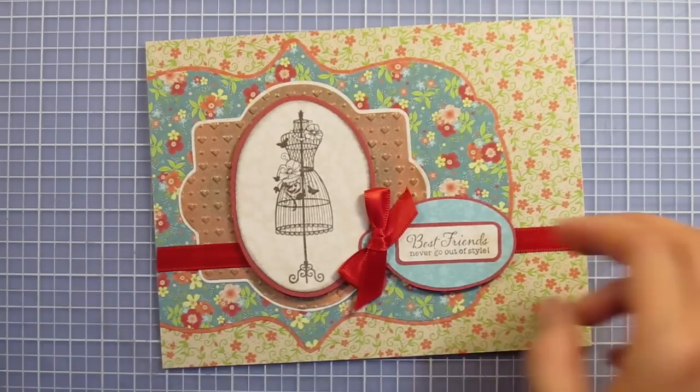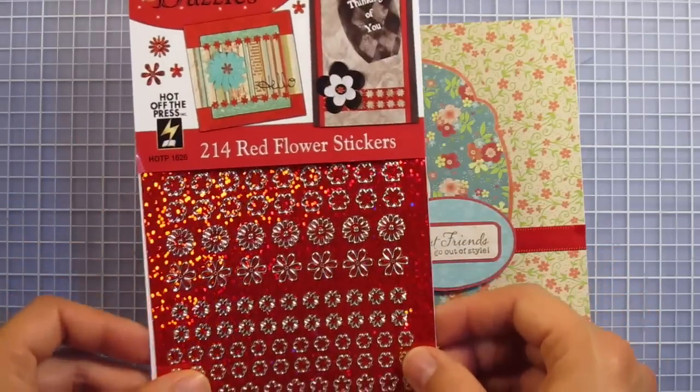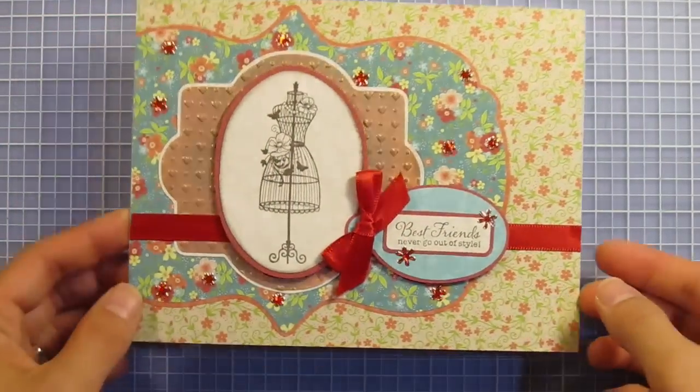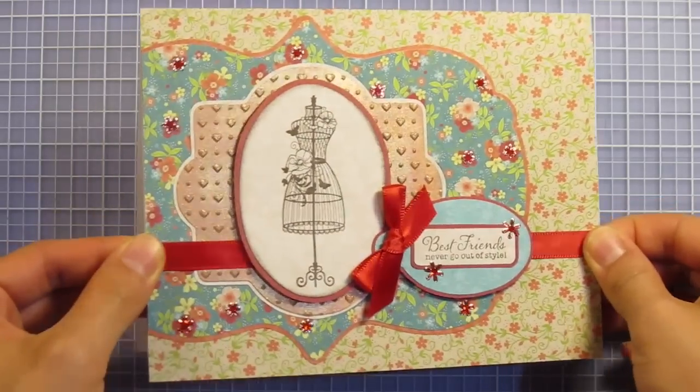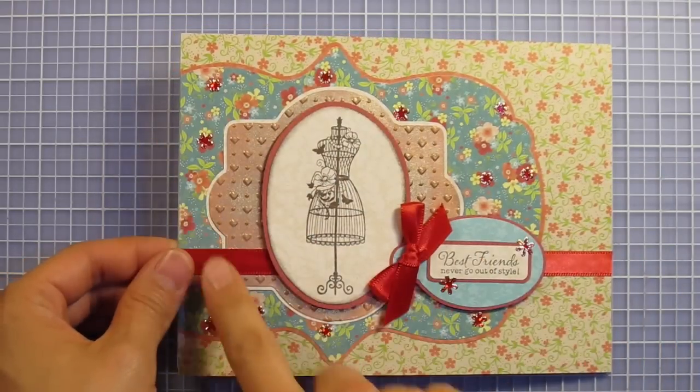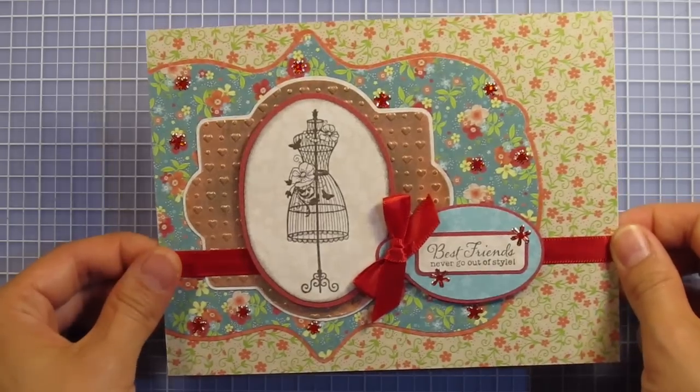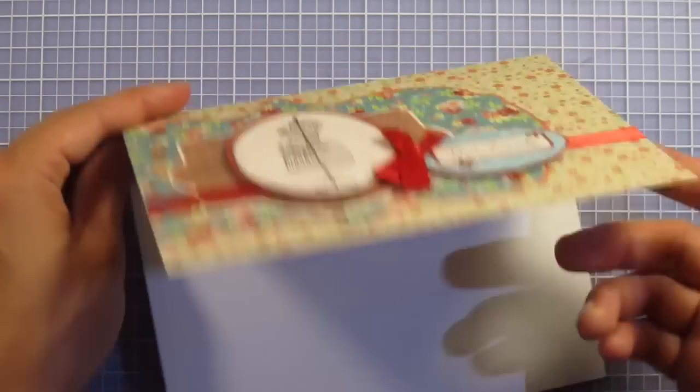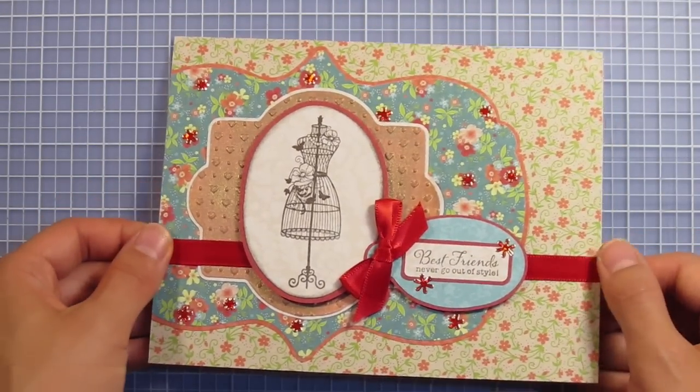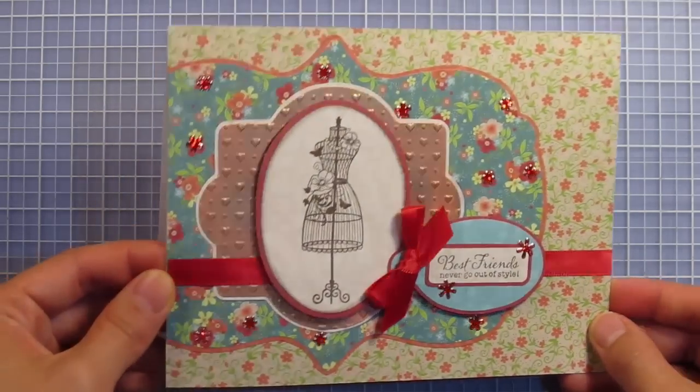We're nearly finished. I just have to add a few of these sparkly blingy red flower dazzles. Now we're finally done. You can see where I placed the dazzles, mainly just on the red flowers of this piece right here and then two on the label. There were so many steps to this card. I don't want to go through the trouble of doing an inside, but you have a lot of tools to work with if you want to make a matching inside. That is today's card. I hope you guys enjoyed.